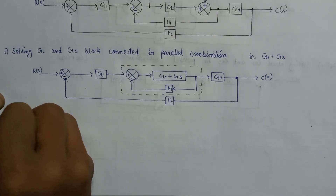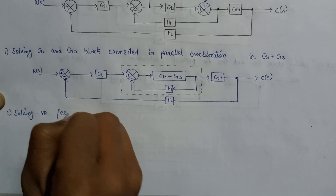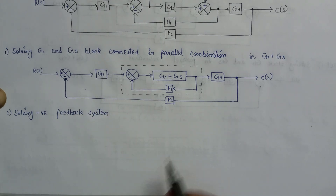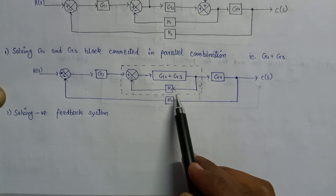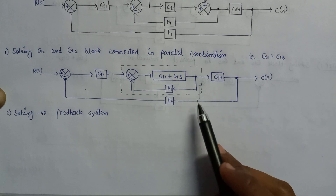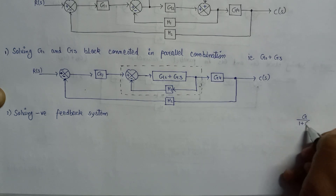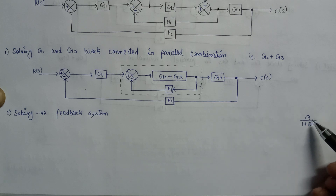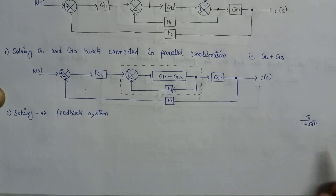Step 2 is solving this negative feedback system. The equivalent transfer function for a negative feedback system is given as G over 1 plus G times H, where G is the forward path gain and H is the feedback path gain. Here the forward path gain is G2 plus G3 and the feedback path gain is H1.